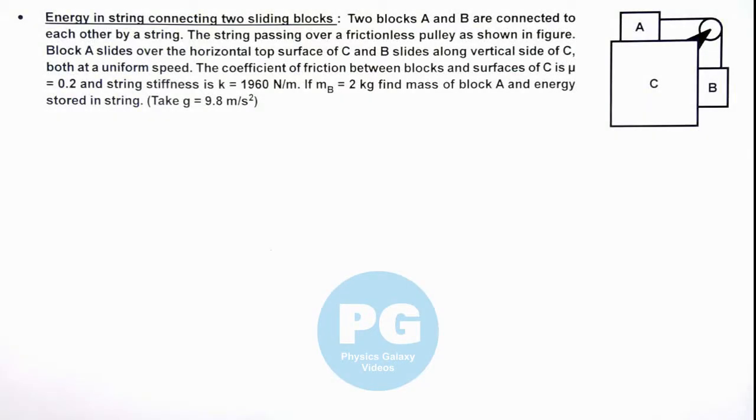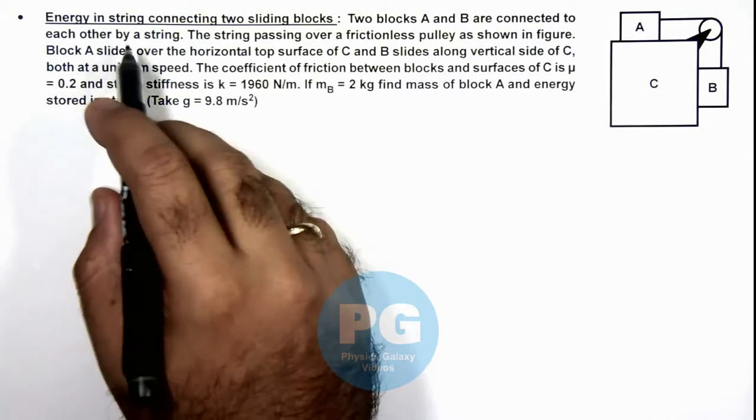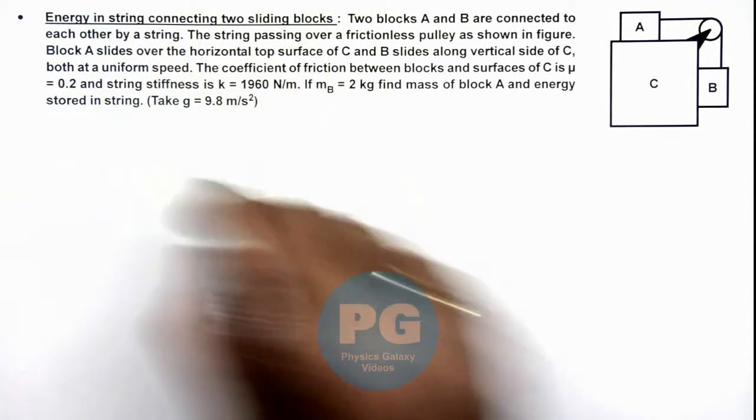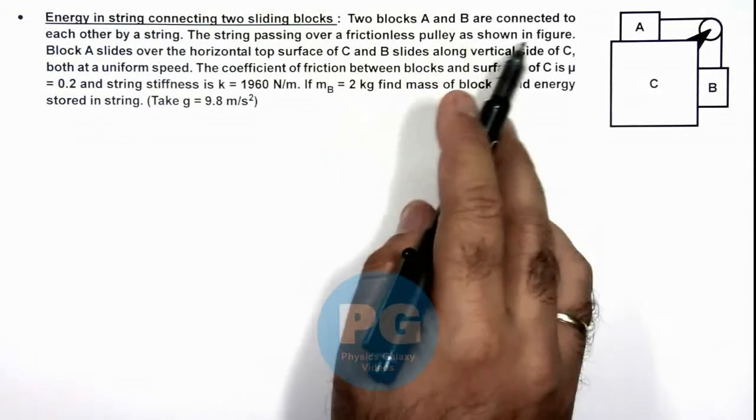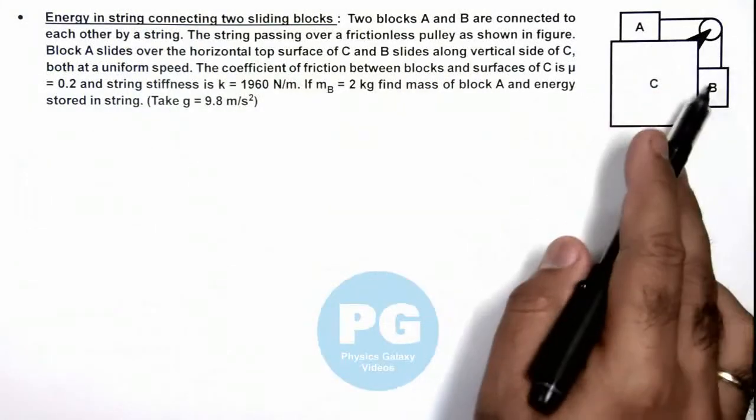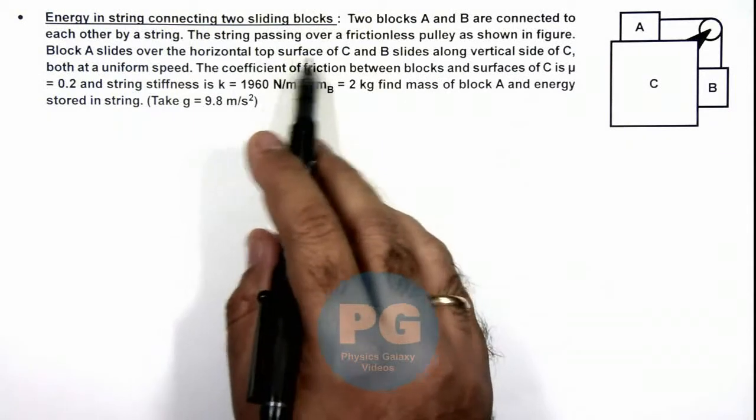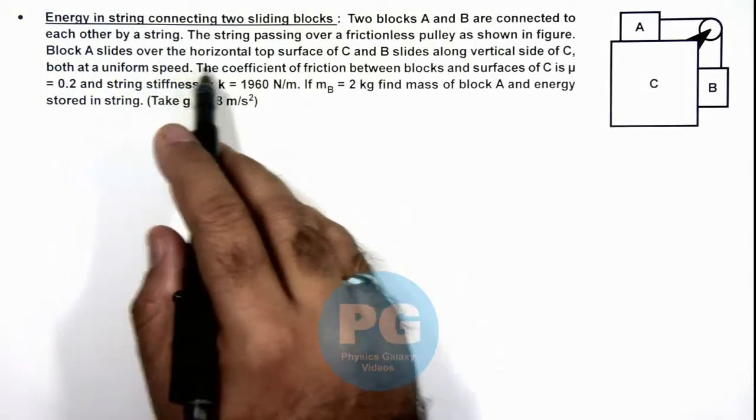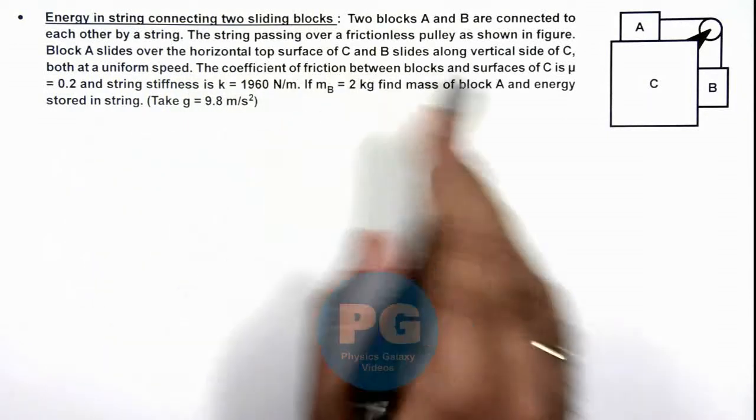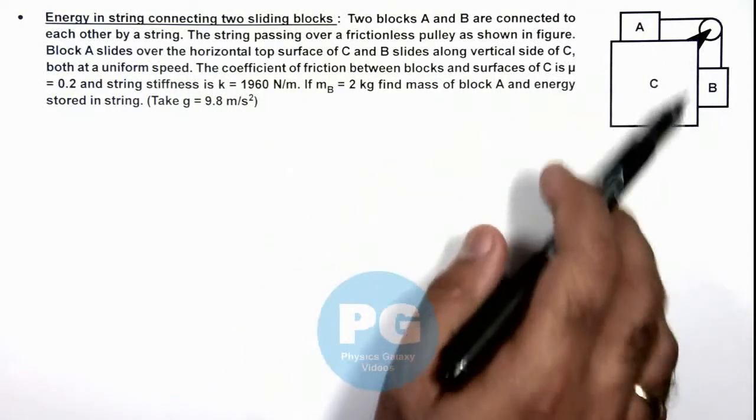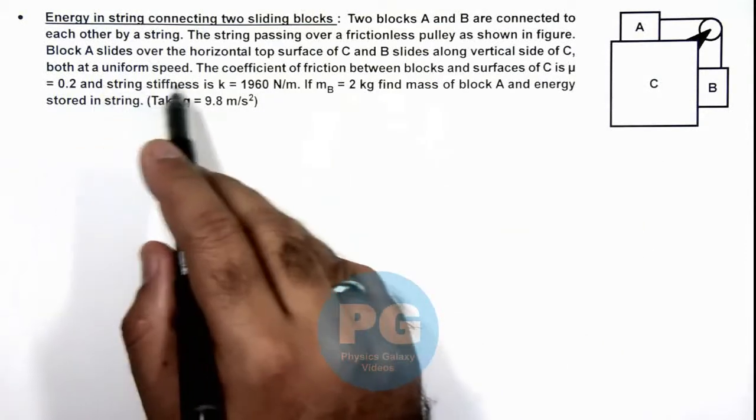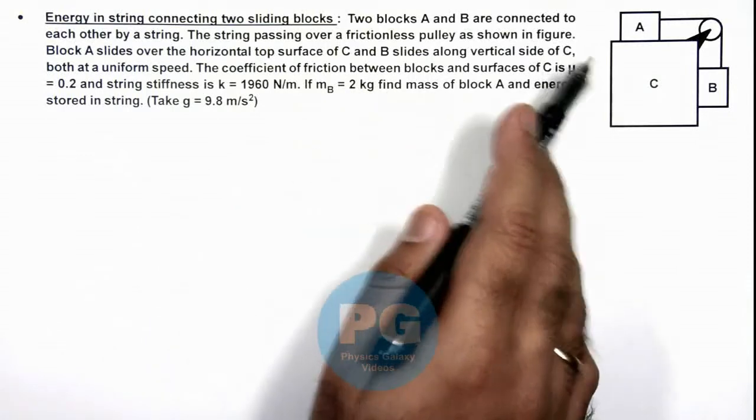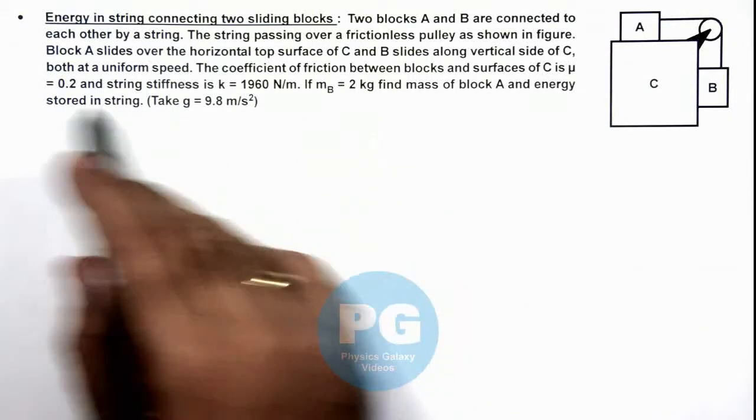In this illustration we'll analyze the energy in connecting string between two sliding blocks. Here we are given that two blocks A and B are connected to each other by a string, and the string is passing over a frictionless pulley as we can see here in the figure. The coefficient of friction between block and surfaces of C is μ, which is given as 0.2.